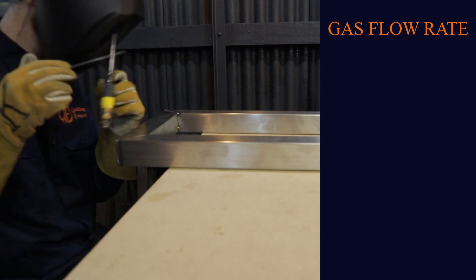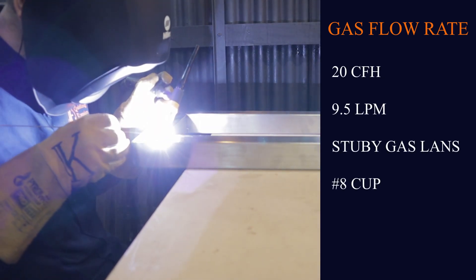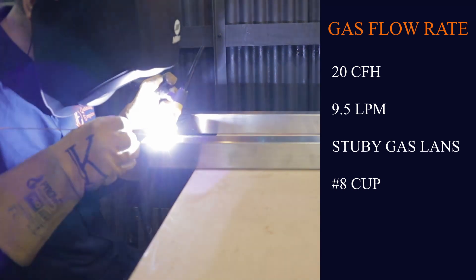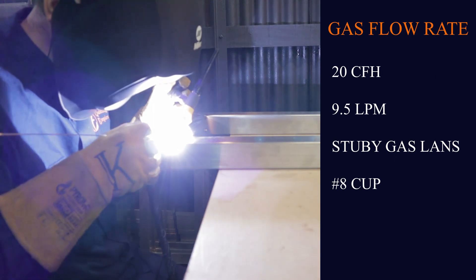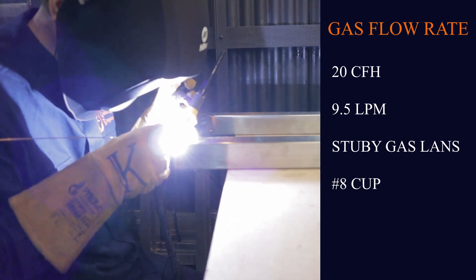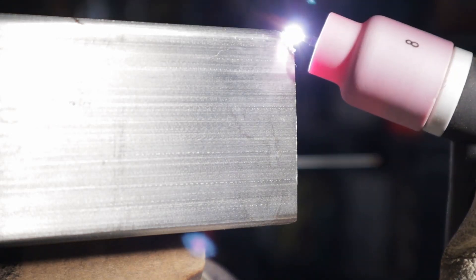The shielding gas flow rates and cup sizes also play a part in the weld quality and appearance but I will keep things strictly to amperage for simplicity. The gas flow rate is set to 20 cubic feet an hour or 9.5 liters a minute. I'll keep the cup size the same which is a size 8 and a stubby gas lens.